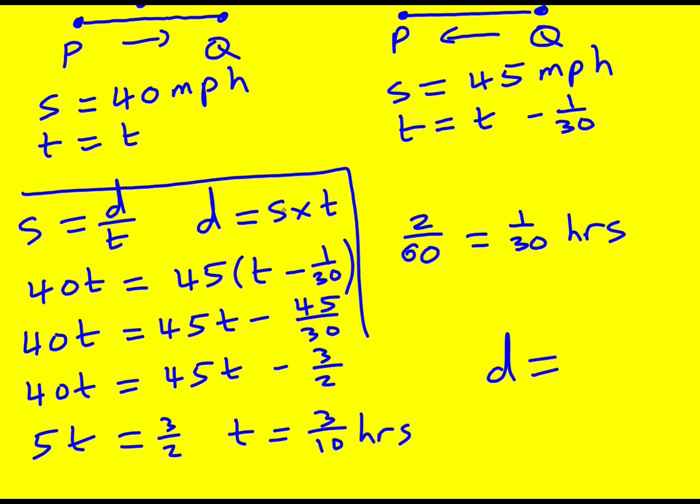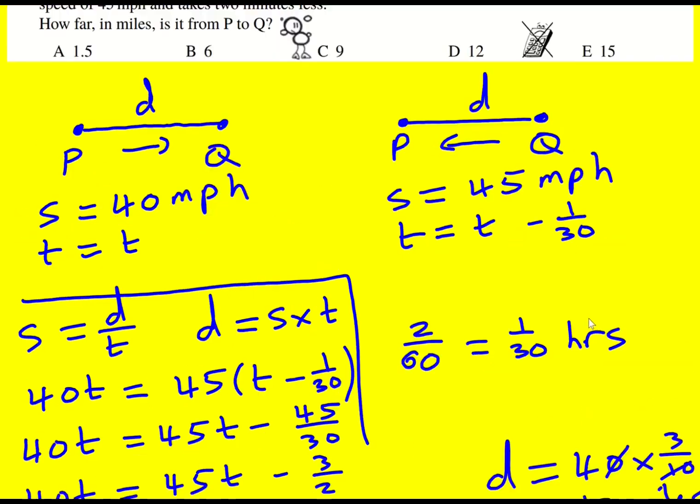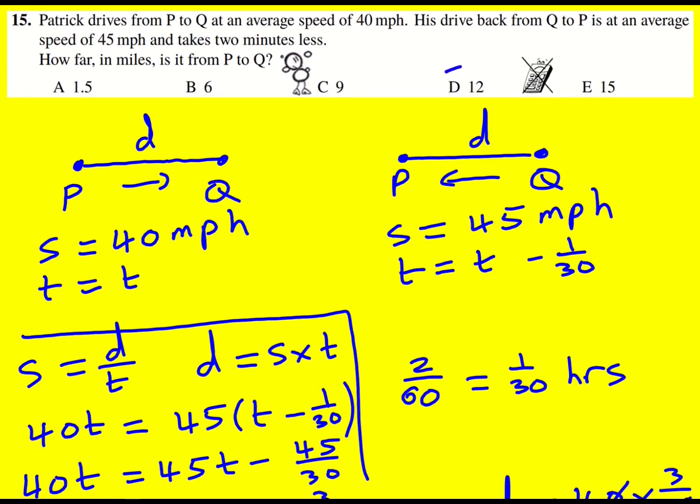And then the distance is actually going to be the speed times time. So if we just take the first one, it was 40 times 3 over 10. The 10 is going to cancel with that zero and we're going to get 12 miles, which is our answer D.